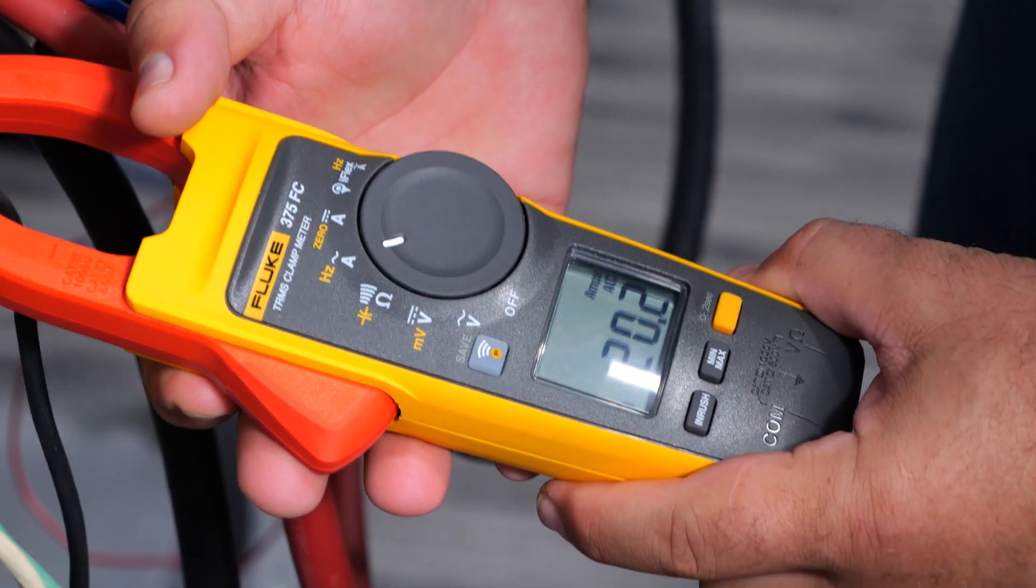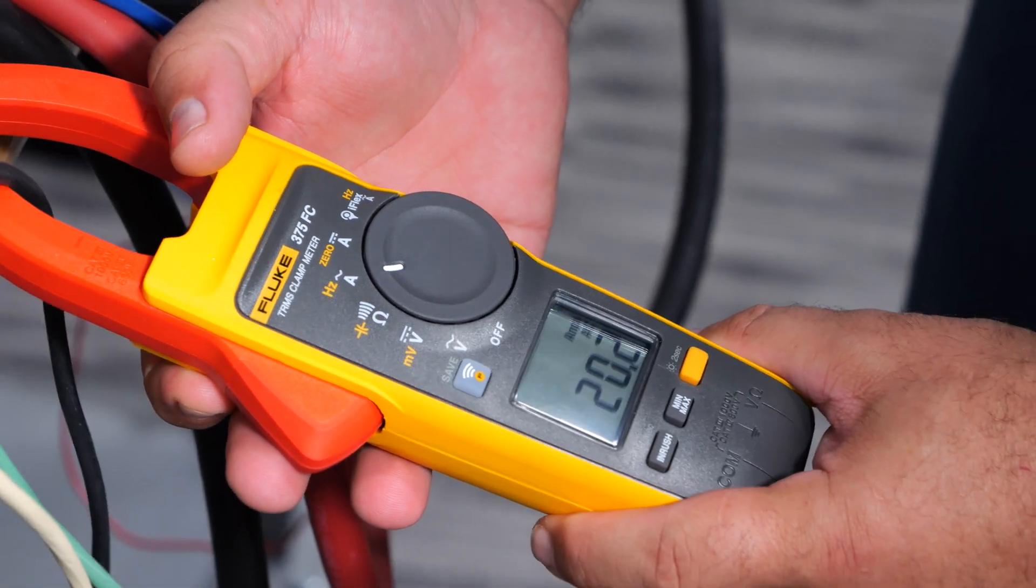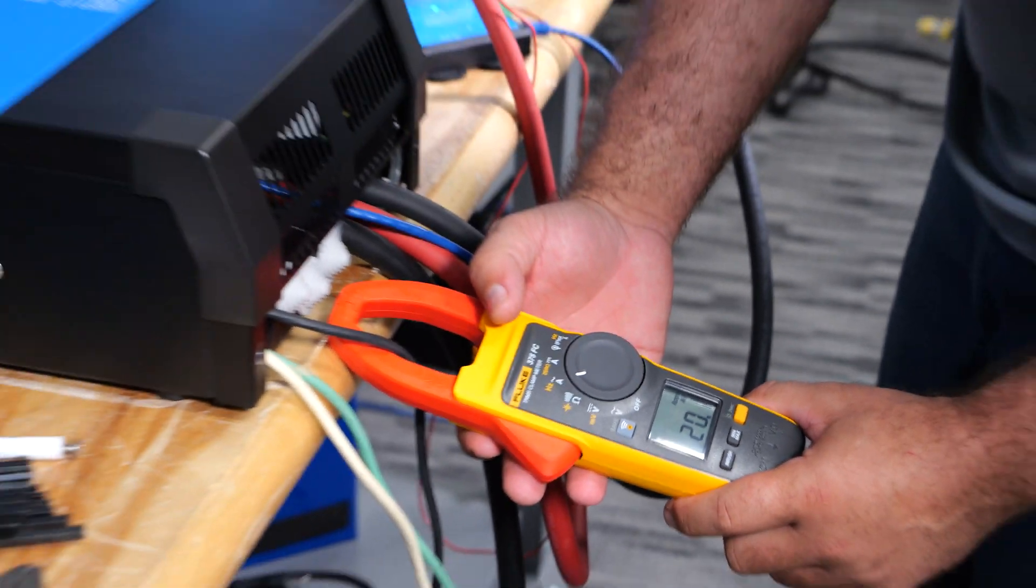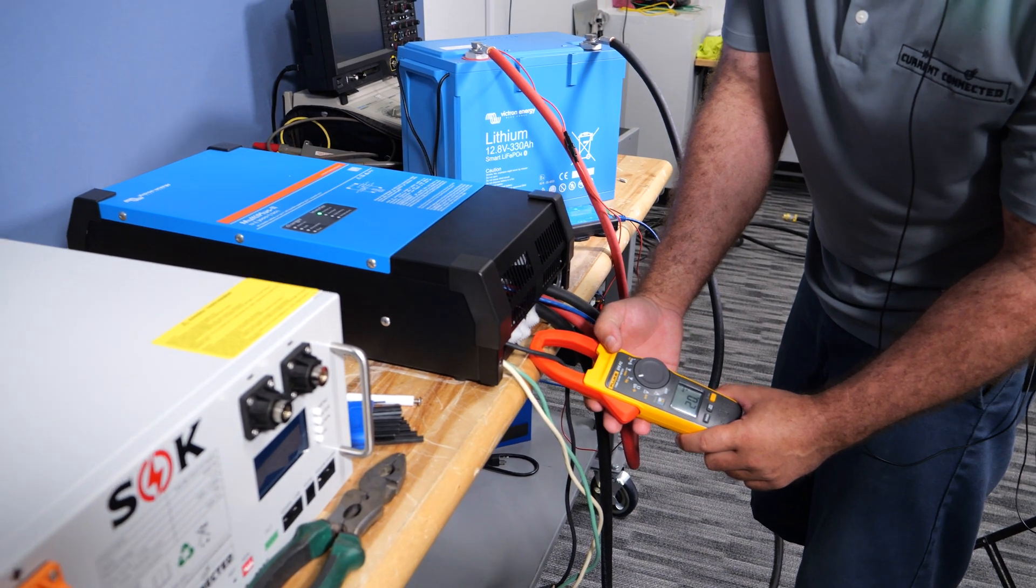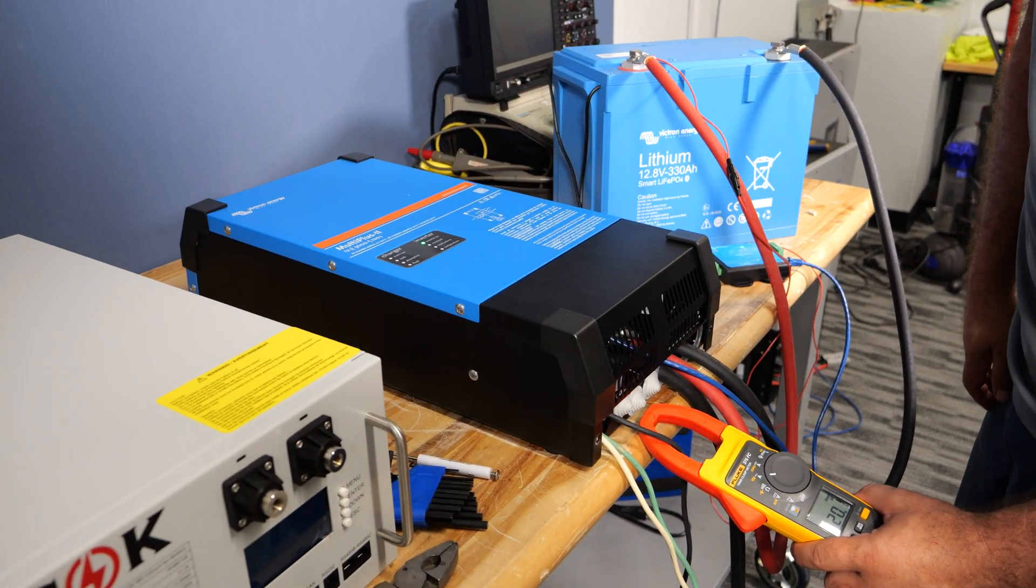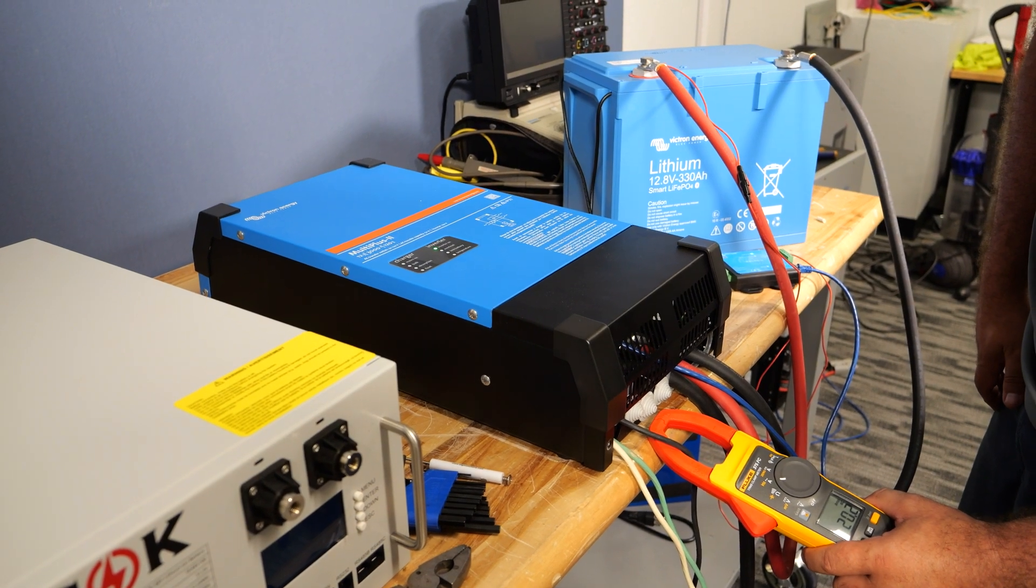Here we go, we've got the clamp meter on. We're pushing 20.2 amps, which is the full continuous rated capacity for this inverter. As you can hear, the fan comes on as the load is taken up by the inverter.